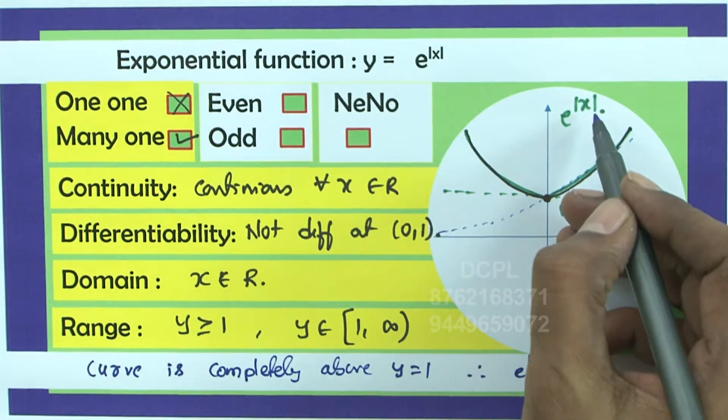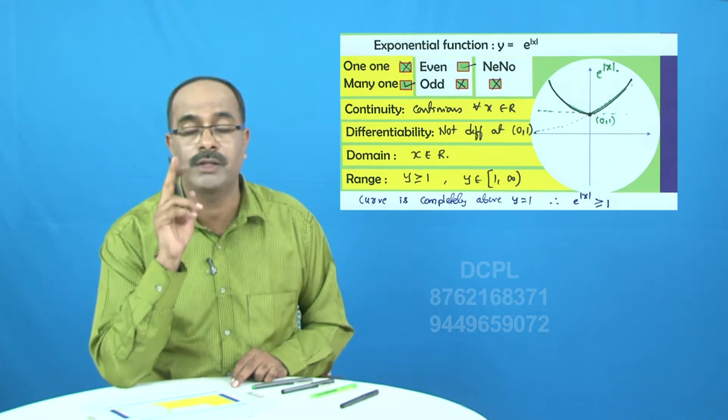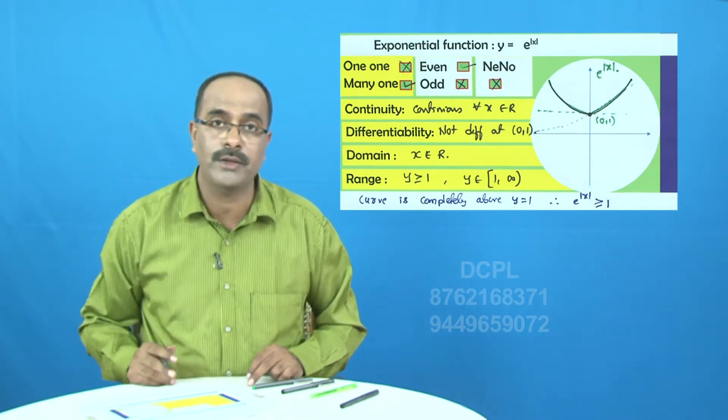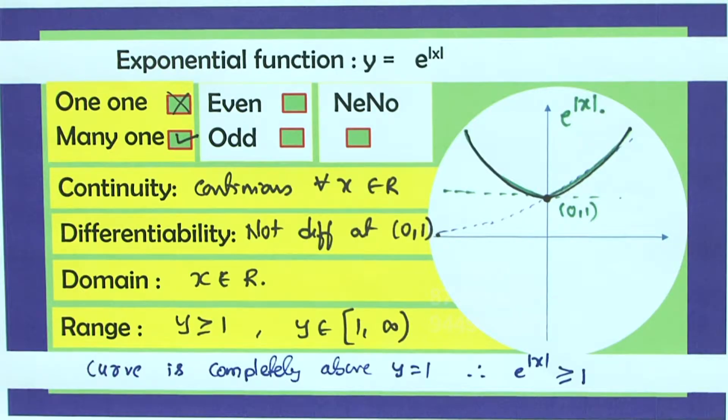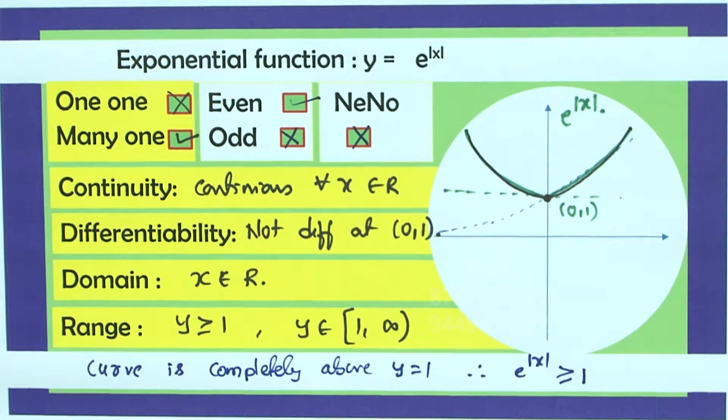e power mod x or any f of mod x. f of mod x is always symmetrical about y axis and f of mod x is always an even function. Therefore, the function is even and not odd and not even-neither function.